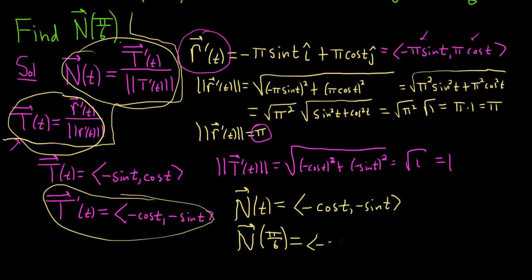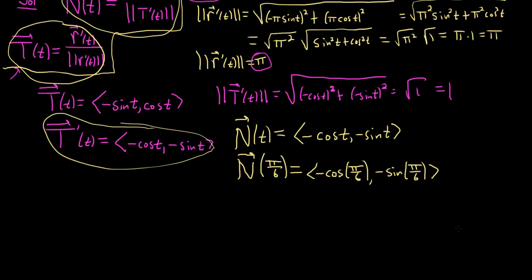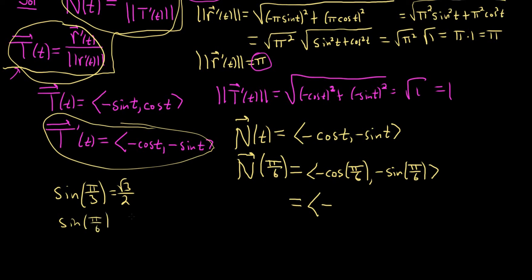Plugging in π/6: we get negative cosine(π/6) and negative sine(π/6). I memorize that sine(π/3) is √3/2, so sine(π/6) must be 1/2, and cosine(π/6) must be √3/2. So the final answer is negative √3/2 and negative 1/2.